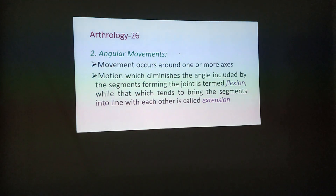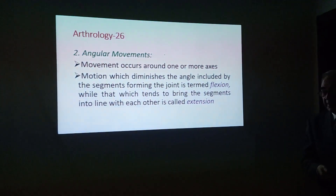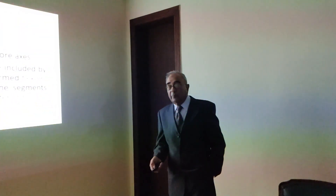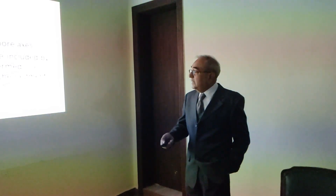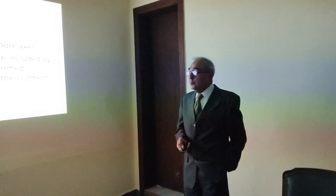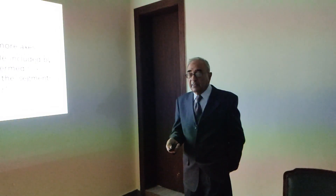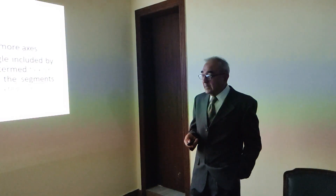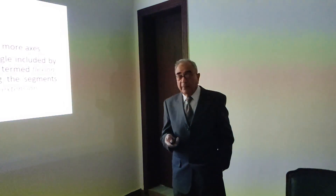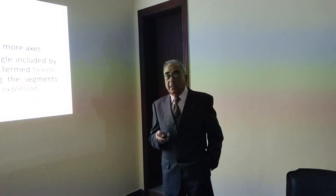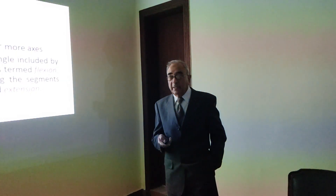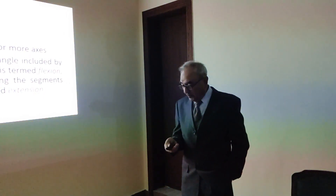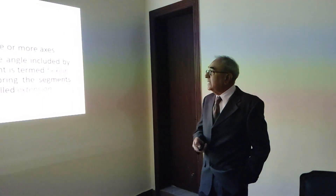For example, the ankle joint is a straight joint of 180 degrees. The movement which decreases the angle between the two bones is flexion, and the movement which increases the angle and brings it back to the normal position of 180 degrees is extension.